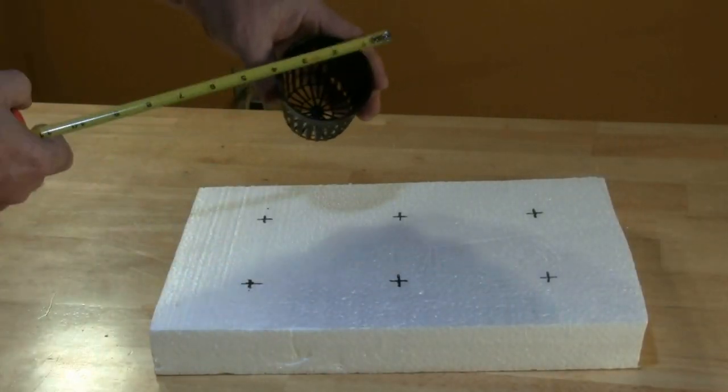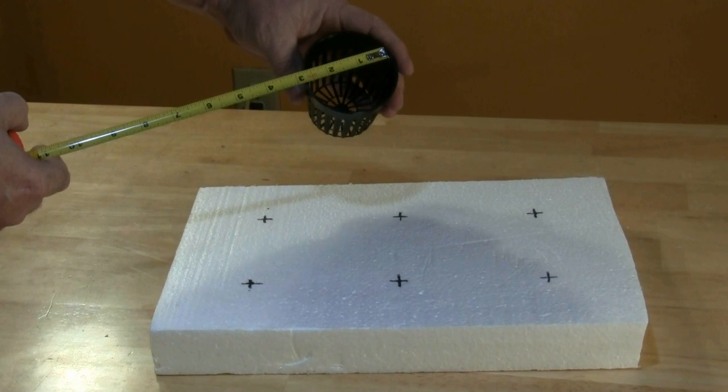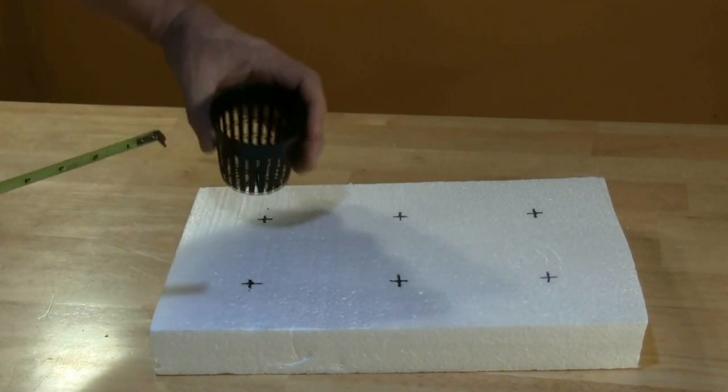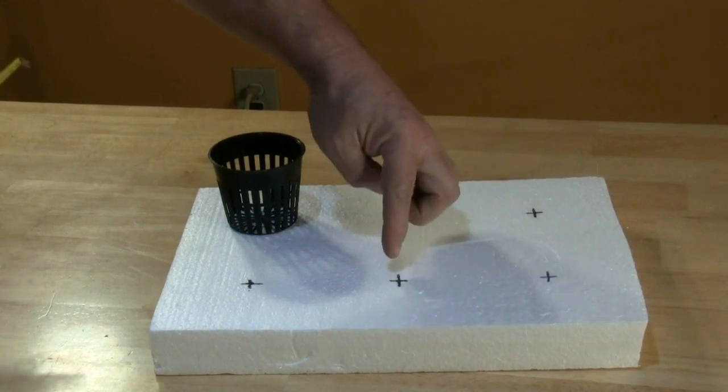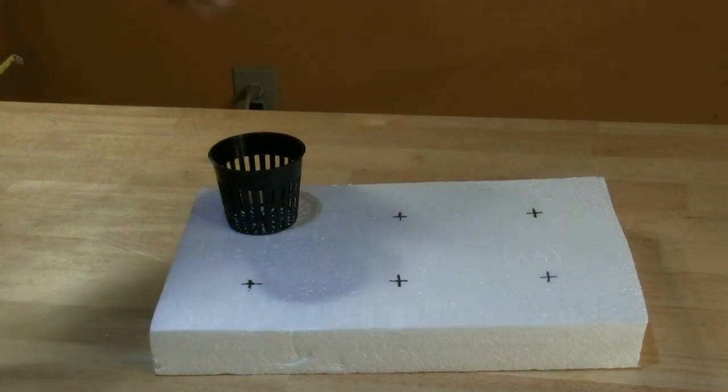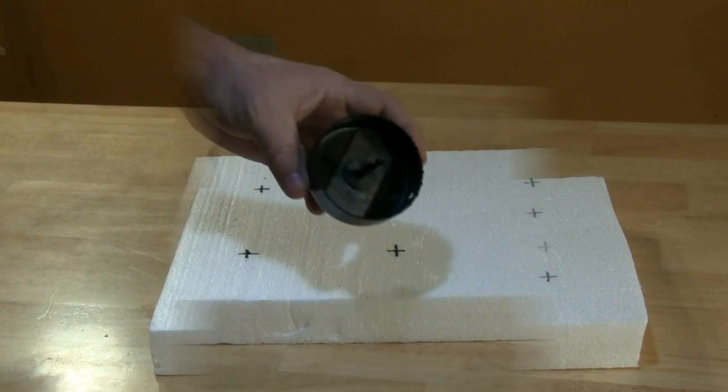Mark the raft to indicate where to cut for the net pots, spacing the marks evenly across the raft. For this project, our net pots are three inches in diameter, and we've marked out six spaces for the net pots.